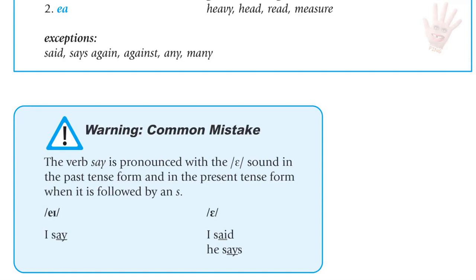Warning — common mistake: The verb 'say' is pronounced with an E sound in the past tense and when followed by S. For example, I say, but I said. He says. Don't say 'I sayed' and 'he says.'